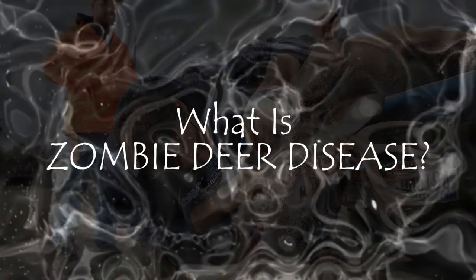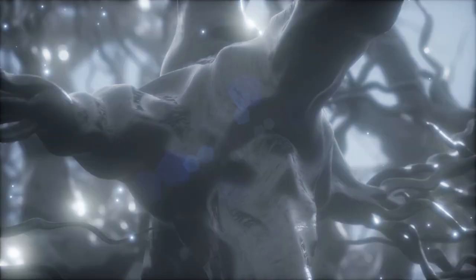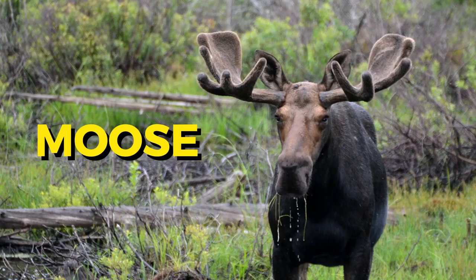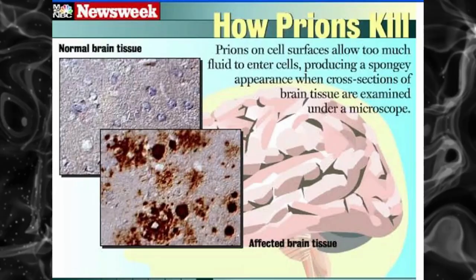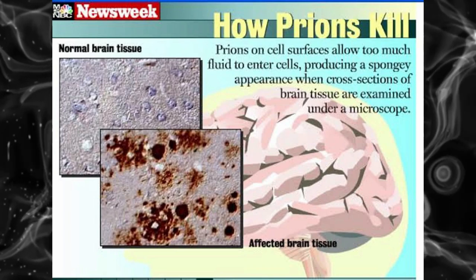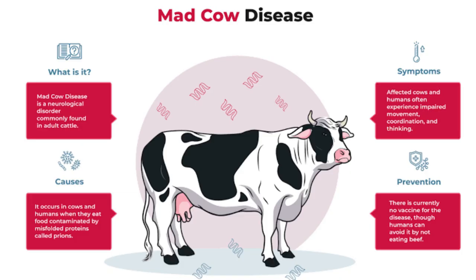What is zombie deer disease? It is a type of chronic wasting disease, or CWD. It affects the brain and nervous system of deer, elk, moose, and other cervids. CWD is caused by abnormal proteins called prions, which are similar to the ones that cause mad cow disease in cattle.